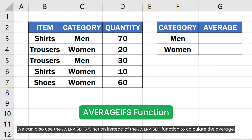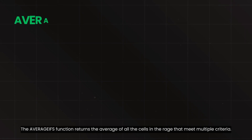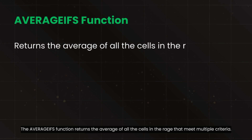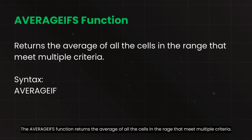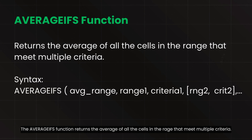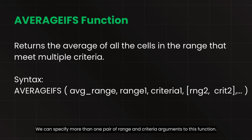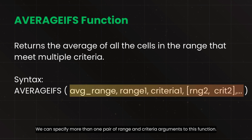We can also use the AVERAGEIFS function instead of the AVERAGEIF function to calculate the average. The AVERAGEIFS function returns the average of all the cells in the range that meet multiple criteria. We can specify more than one pair of range and criteria arguments to this function.